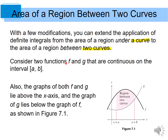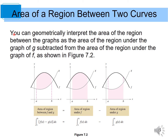Consider two functions f and g that are continuous on the closed interval [a, b]. Also, the graphs of both f and g lie above the x-axis. Look at this figure. The graph of g lies below the graph of f. You can geometrically interpret the area of the region between the graphs as the area of the region under the graph of f subtracted from the area of the region under the graph of g.